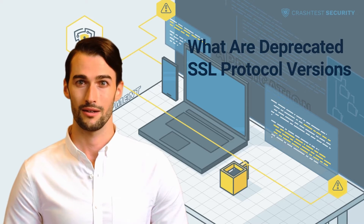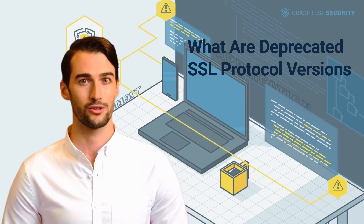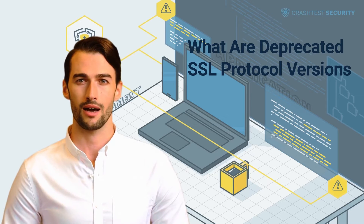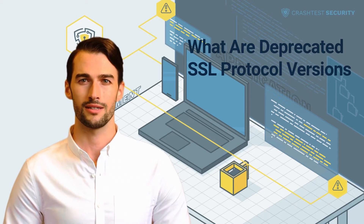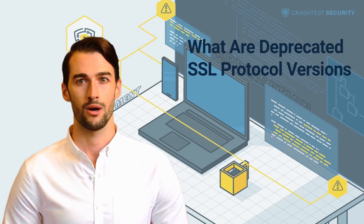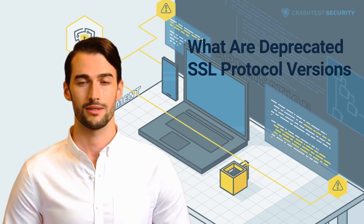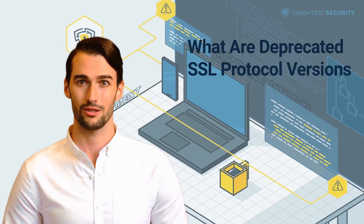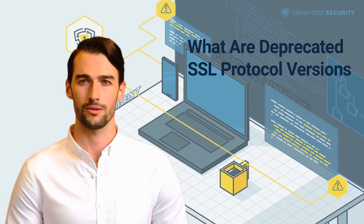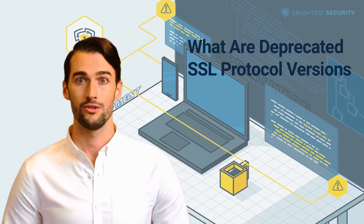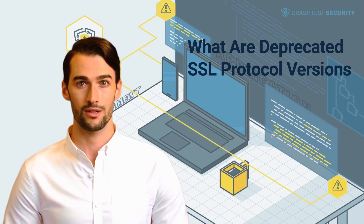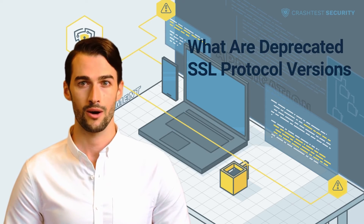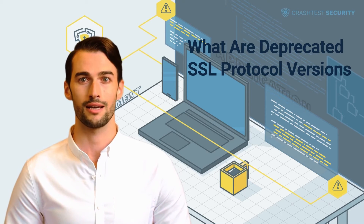In their latest cheat sheet for transport layer security, the OWASP guide recommends the following setting: the SSL protocols have many weaknesses and should not be used in any circumstances. General-purpose web applications should only support TLS 1.2 and TLS 1.3, with all other protocols disabled.